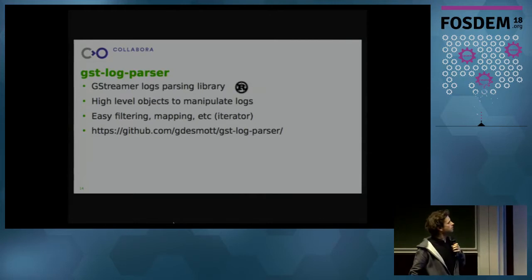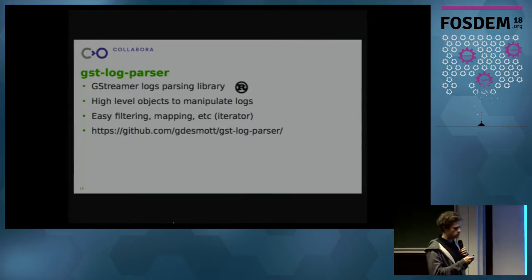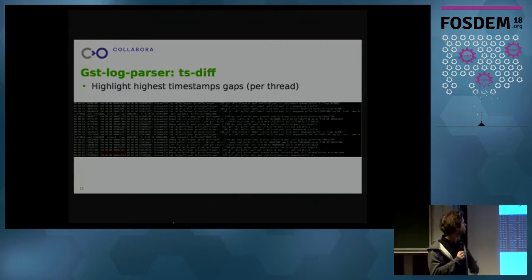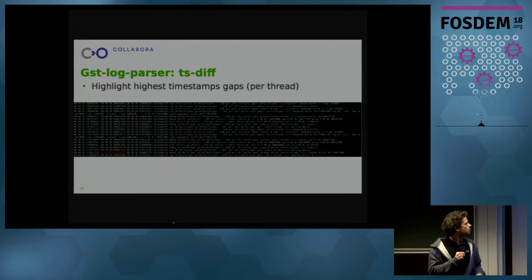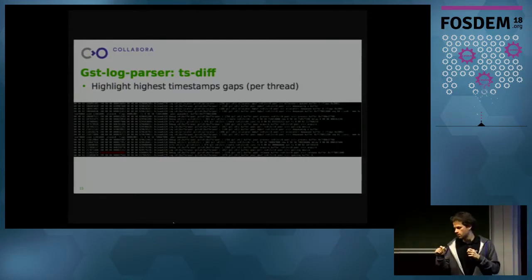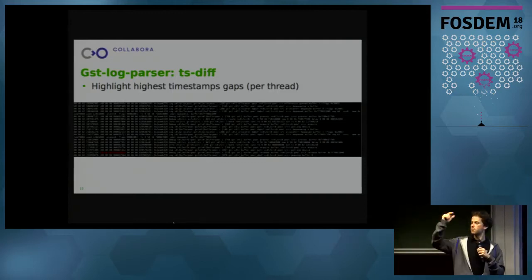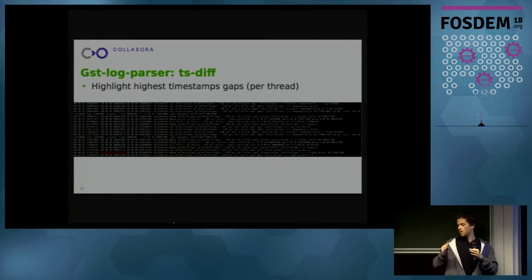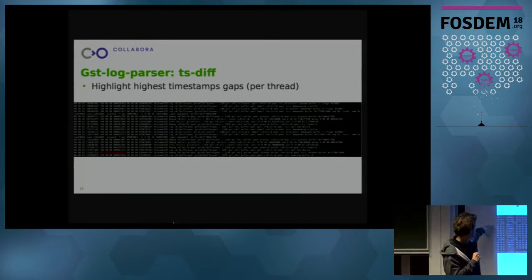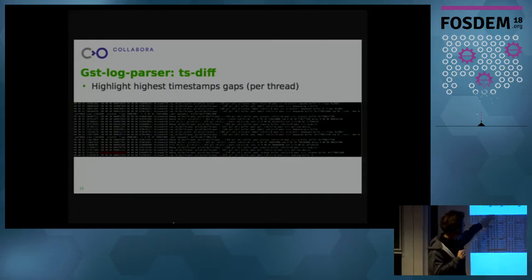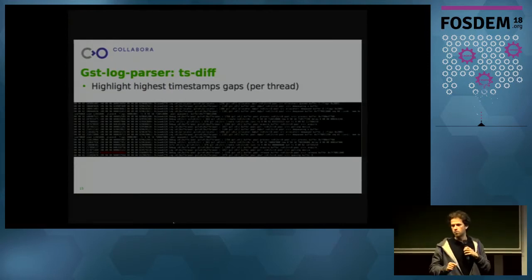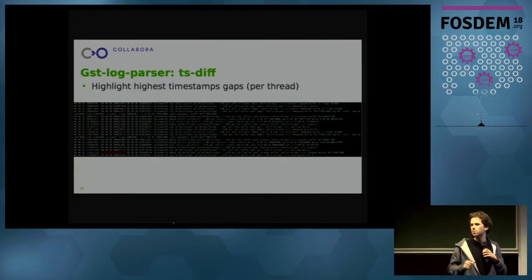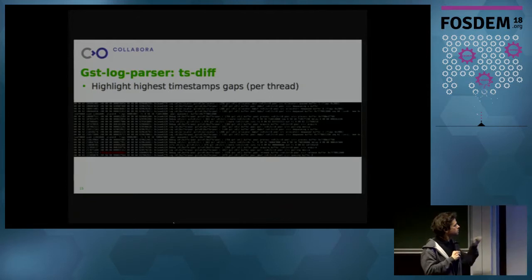The code is on GitHub. To give you one small example: tsdif is a small tool I wrote using that library. For each thread, it will compute the difference between one specific event and the last event in that thread. So if there is a gap in the pipeline where something is stuck, it will detect it very easily. The bigger differences will be highlighted in red. Just by parsing that, you can see: my pipeline here waited for 100 milliseconds — that shouldn't happen, what's going on here. You can see the timestamp difference very easily using that.